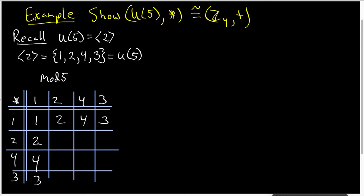We now move on to the second row. 2 times 2 is 4, 2 times 4 is 8, but we are doing mod 5 arithmetic, so that is 3. And 2 times 3 is 6, but that is 1 mod 5. And so this column gets filled in with a 3 and a 1.